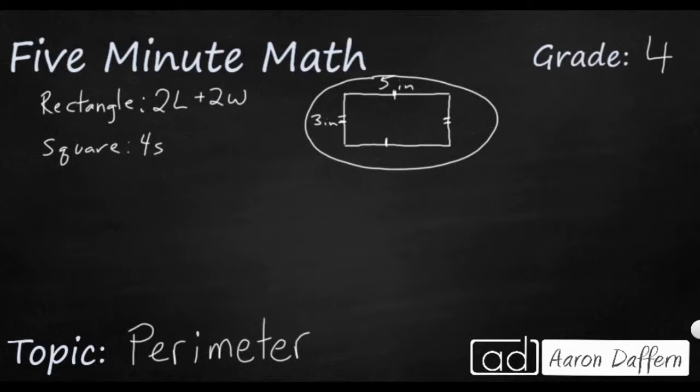So even though there's only two sides listed, 3 inches, 5 inches, in your brain you know this is also 5 inches at the bottom, this is also 3 inches on the side. So rather than seeing all four, all you need to do is take the length and double it, the width and double it.